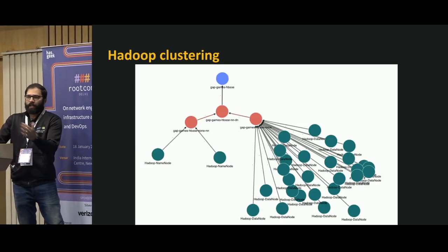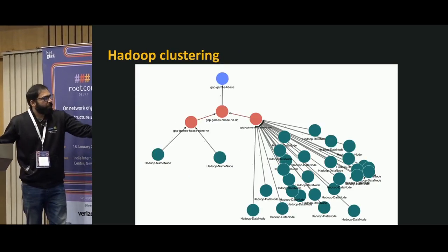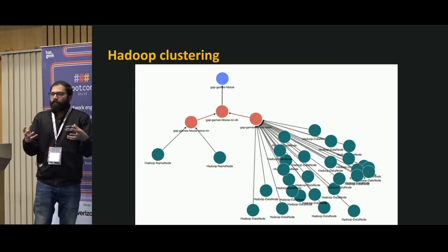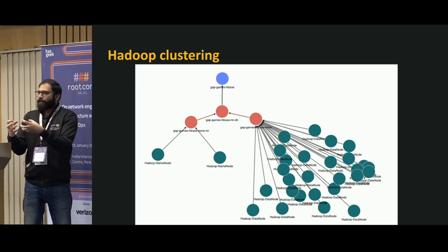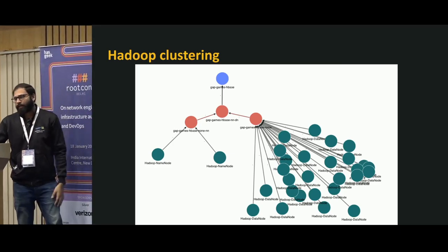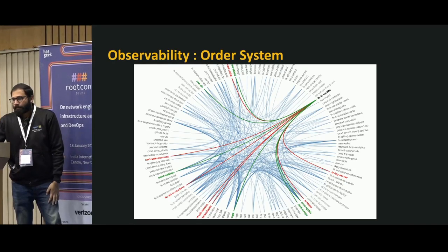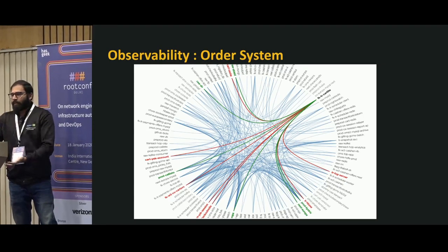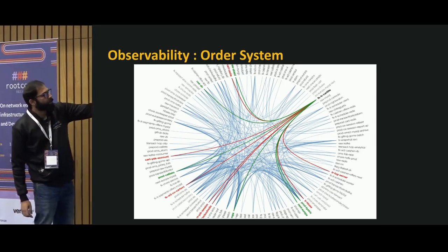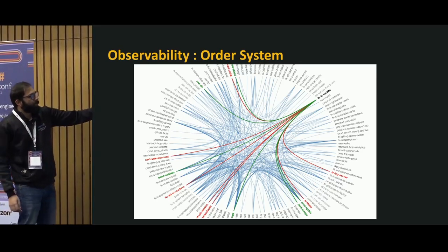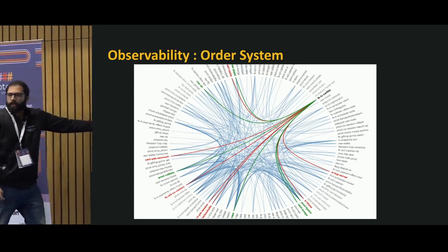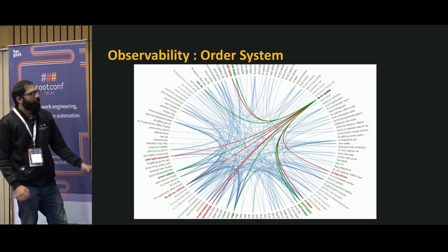Similarly for HBase — we do it for every data store you name. For HBase, we figure out the data node, name node, and journal node interactions and group them together under one Hadoop or HBase cluster. Doing all this makes it much simpler and easier to visualize your data clusters. The green nodes represent incoming dependencies for a particular application, and the red ones represent outgoing dependencies.